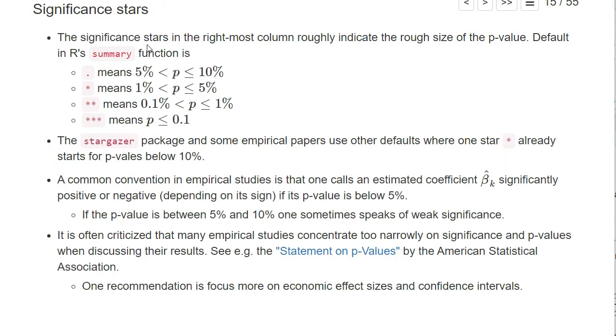Finally, there are significance stars, which you can think of as a short description of the range into which the p-value falls. For example, our summary function has the following notation: one star means that the p-value for this coefficient is between 1% and 5%, two stars means between 0.1% and 1%, and three stars means smaller than 0.1%.